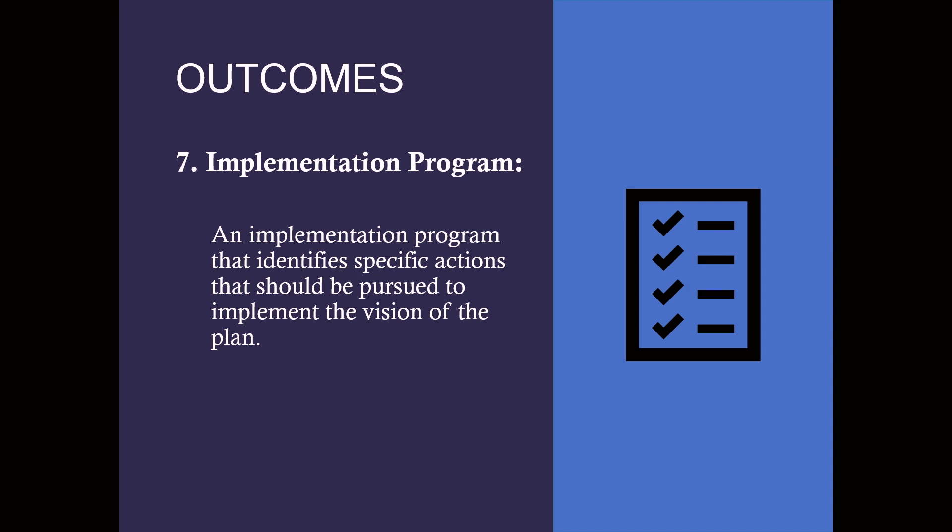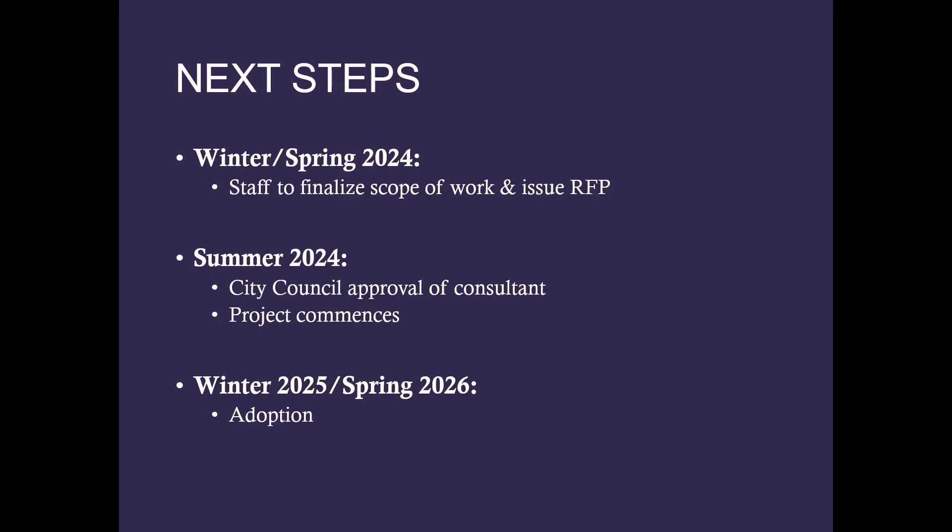The final outcome is an implementation program identifying specific actions to pursue to implement the vision of the plan. One of the main implementation items will likely be an update to our zoning code, also included as an action item in the city council's strategic plan. In terms of next steps, staff will finalize the scope of work and issue the RFP in winter or spring of 2024. The contract will come back to City Council in summer for consultant approval, with adoption anticipated in winter 2025 or spring 2026.